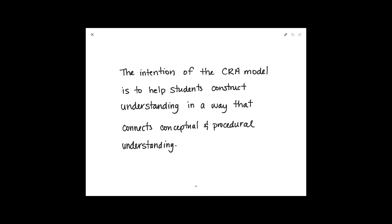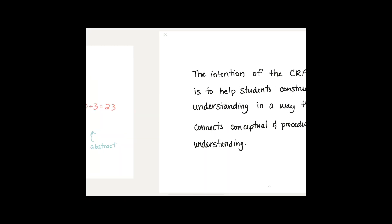The intention of the CRA model is to help students construct understanding in a way that connects the conceptual and procedural understanding. When we introduce something new, we do that in a concrete way with hands-on materials that they can move around, manipulate, and touch. Then we make connections into the next phase, which is drawing — we draw pictures of those concrete materials. Then we move on to the final stage, which is abstract, where we work with digits and symbols.